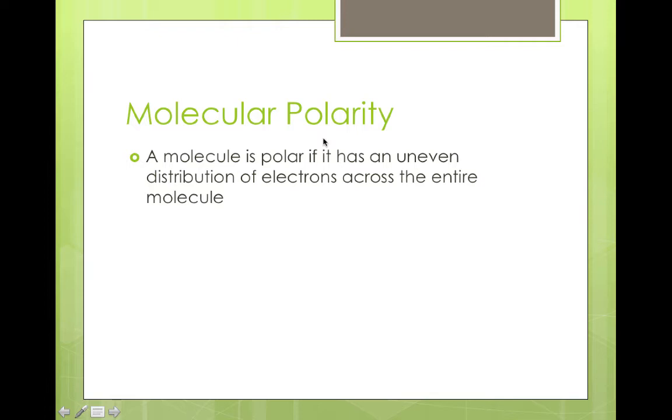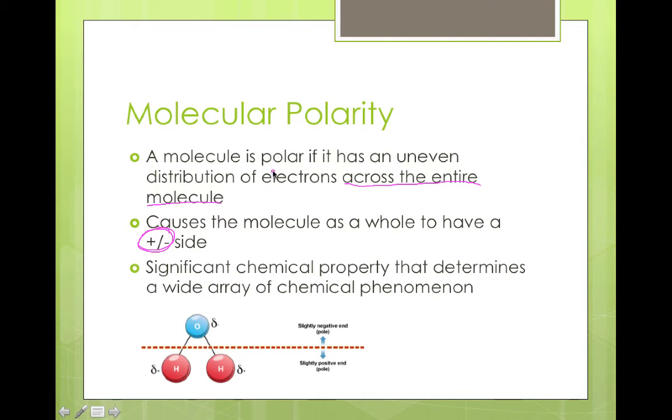So that then brings us to the topic of today, the idea of molecular polarity. We'll start with a quick definition. A molecule is polar if it has an uneven distribution of electrons, and here's the difference, across the entire molecule. Bond polarity focused on just one bond at a time, this is across an entire molecule. This causes the entire molecule as a whole to have positive and negative sides. And this ends up being a very significant chemical property that turns a wide array of chemical phenomena in a substance.